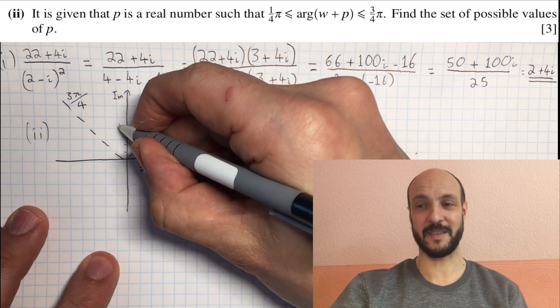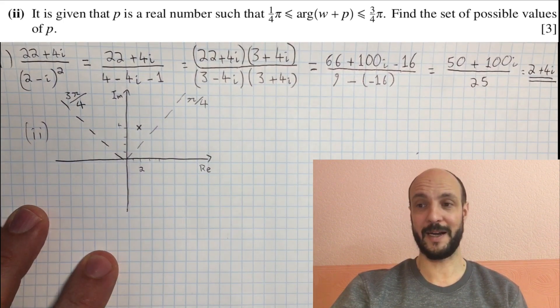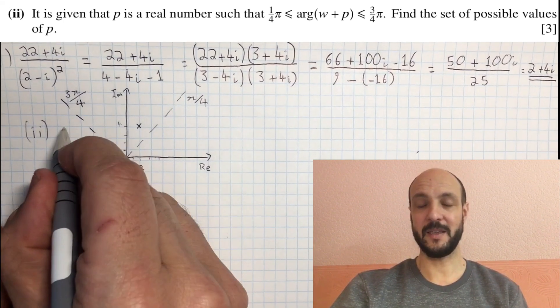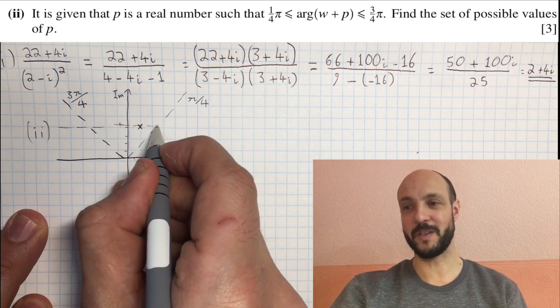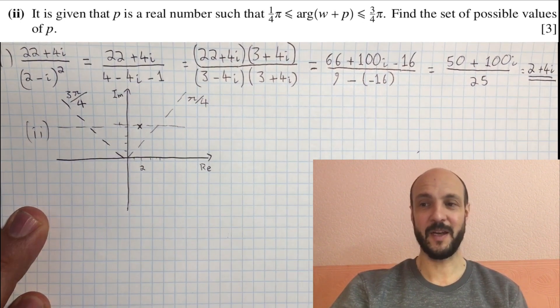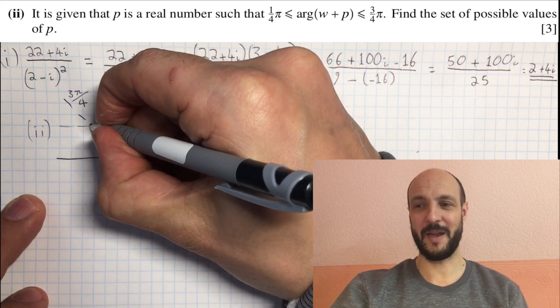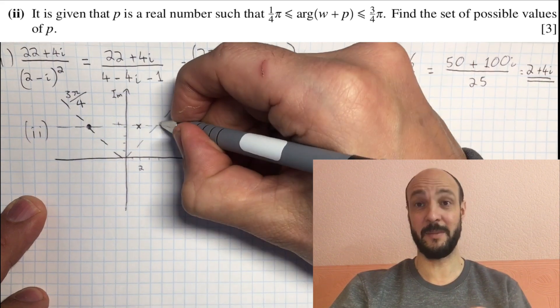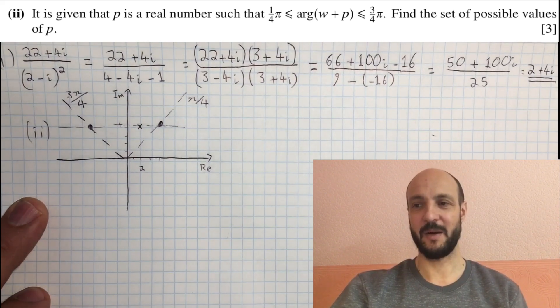And 3pi over 4 is the equivalent line in the second quadrant going up to the top left. And so if we put those two lines on as dashed lines, and we consider our point 2 plus 4i, because the number that we're adding is a real number, we can only move to the right or to the left. And we have to stay between these two lines. So we need to think, well when are these, what's the limiting point where these lines, these border lines will be crossed.